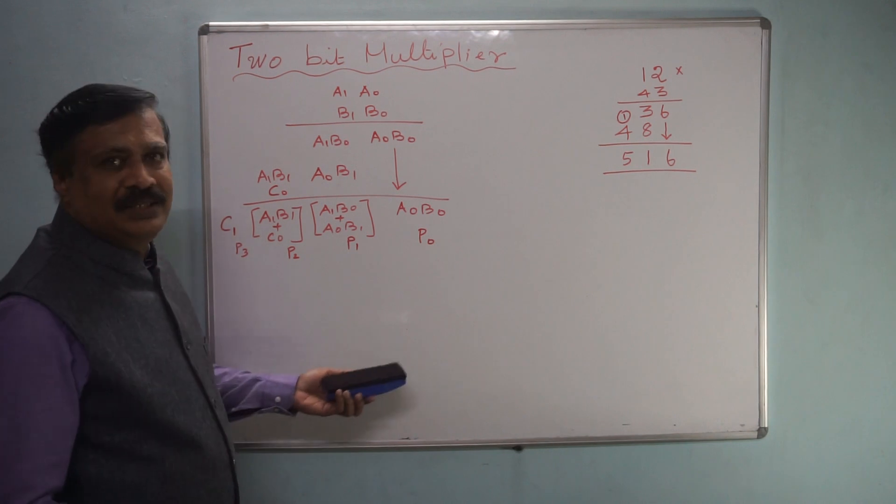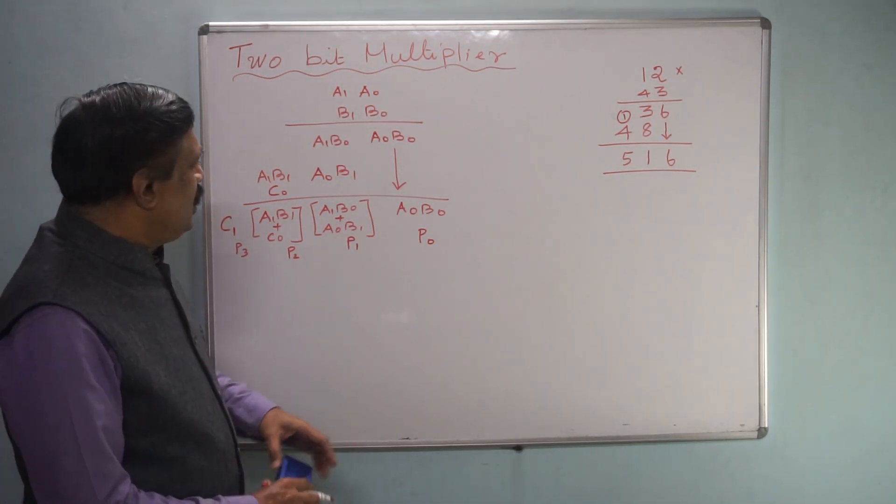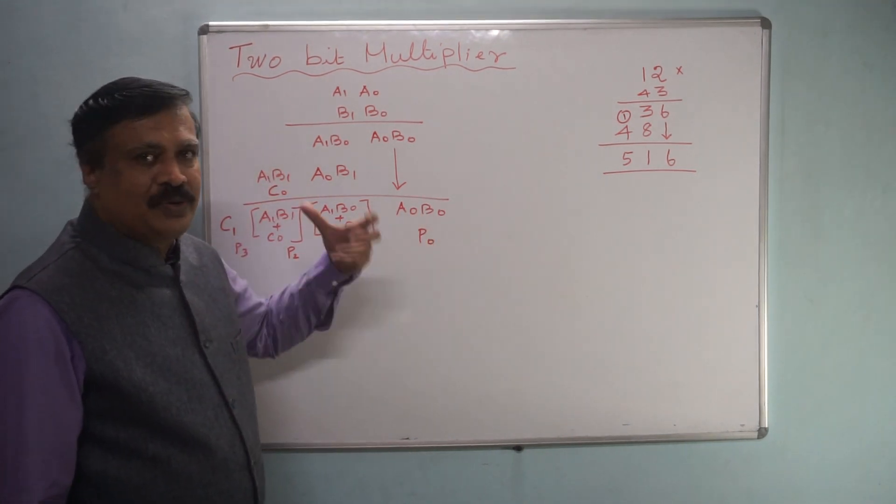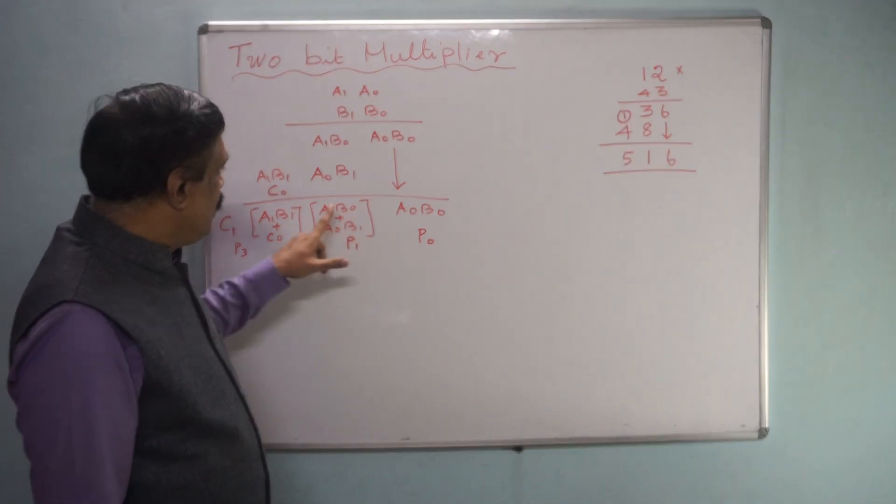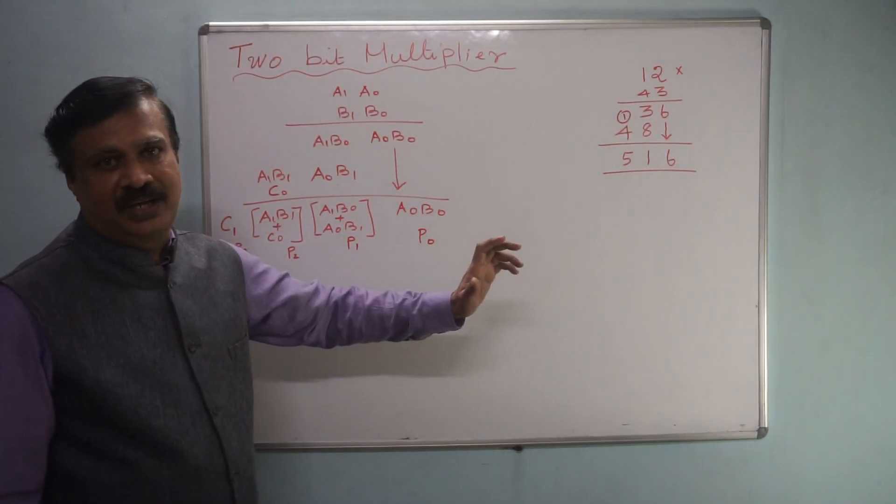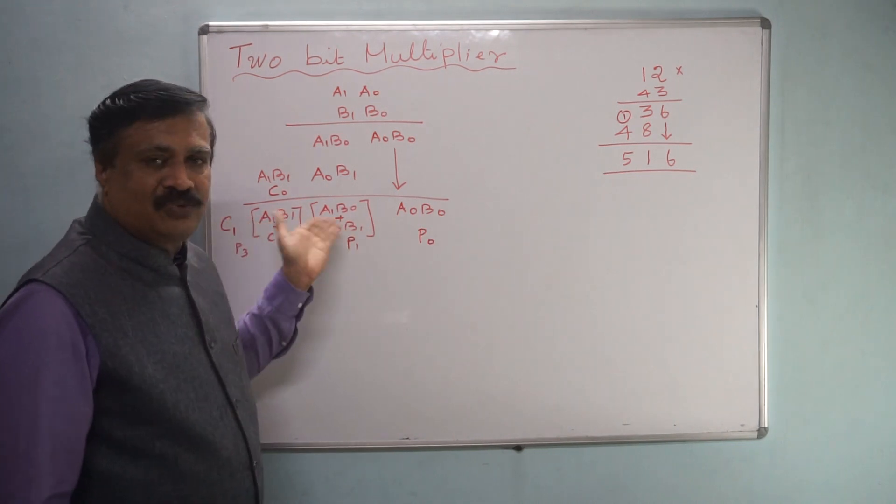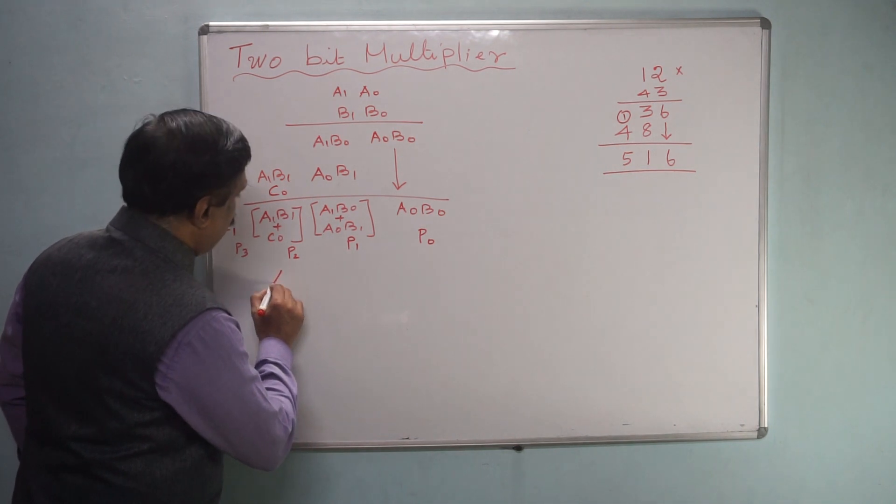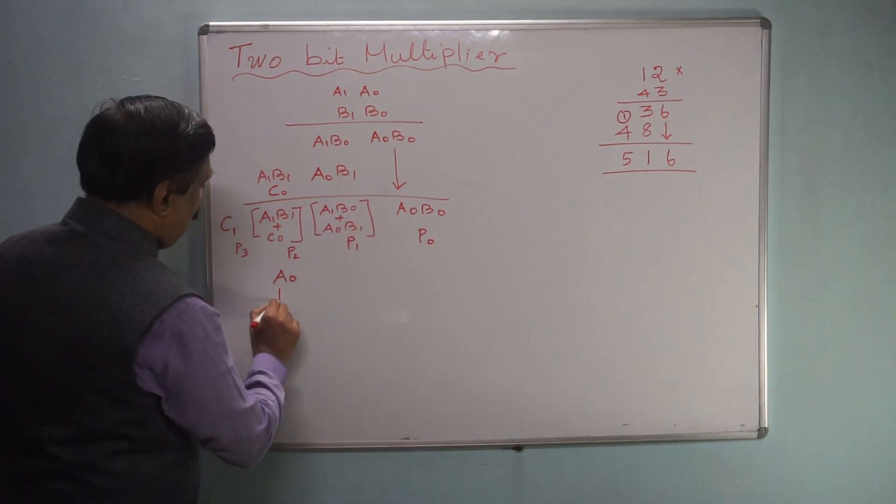Now we have to implement this or design this in a circuit form. Now as already you are familiar with this, 2 bits are multiplied, that means it is an AND gate. That means one product, another 2 products, 1 product. That means 3 products are there, therefore you require, sorry 4 products are there, therefore you require 4 AND gates. Therefore, first you put the numbers A0 and then this one you put it, B0.